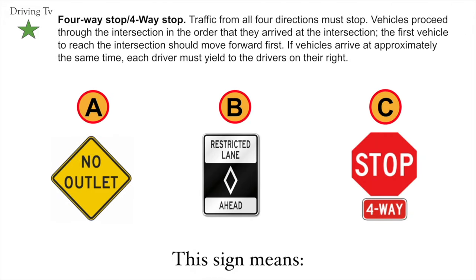Four-way stop. Traffic from all four directions must stop. Vehicles proceed through the intersection in the order that they arrive. The first vehicle to reach the intersection should move forward first. If vehicles arrive at approximately the same time, each driver must yield to the driver on their right. The correct answer is C. Four-way stop.